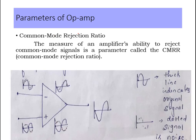Next is common mode rejection ratio, which is a very important parameter of an op-amp. It is used to measure the ability of an op-amp to suppress or reject signals that are common to both inputs. When both inputs of the op-amp are identical, the op-amp has the ability to produce a zero output voltage — this is called common mode rejection.